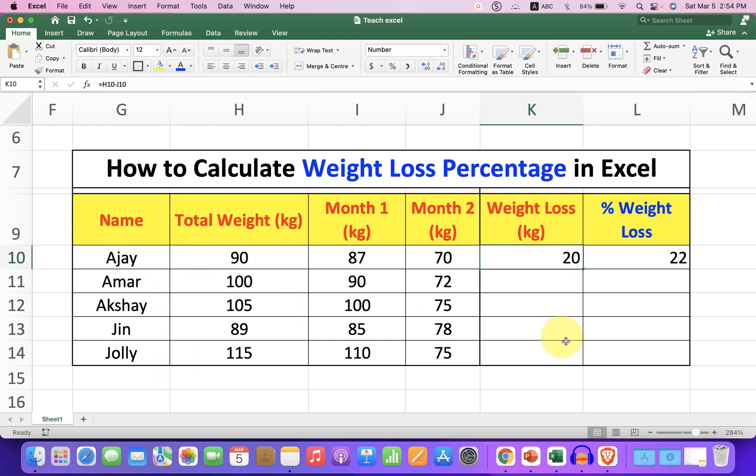Now if you have several rows, you can just drag the cell down like this to calculate the weight loss for each person. To calculate the percent weight loss, do the same thing. Just drag the cell down and you will get the percentages of other people.